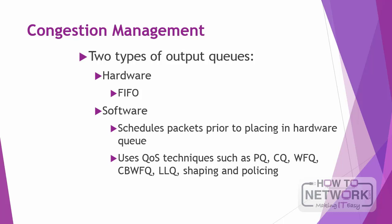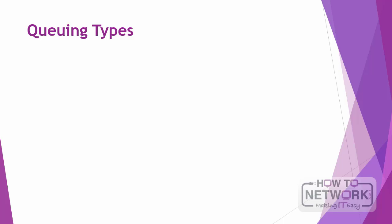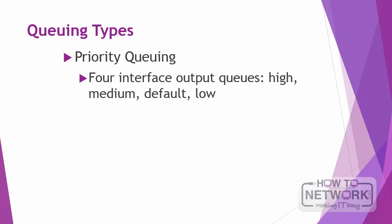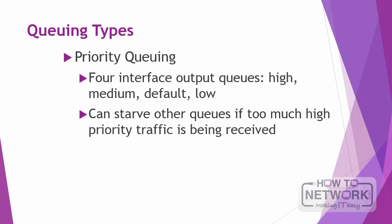Cisco does not expect you to know each of these in detail for the CCDA exam — that would come later in your CCDP studies. Priority queuing is a queuing method that establishes four interface output queues serving different priority levels: high, medium, default, and low. Unfortunately, priority queuing can starve other queues if too much data is in one queue, because higher priority queues must be emptied first before lower priority queues.